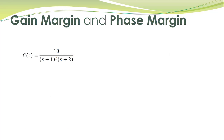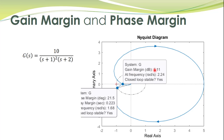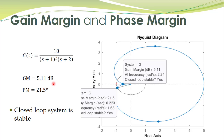Here is another example using a complete Nyquist plot obtained with MATLAB. To determine phase margin and gain margin, we find the point at 180 degrees and the point with magnitude equal to 1. The gain margin comes out to be 5.11, and the phase margin is 21.5 degrees. Both are positive, so the closed loop system is stable.